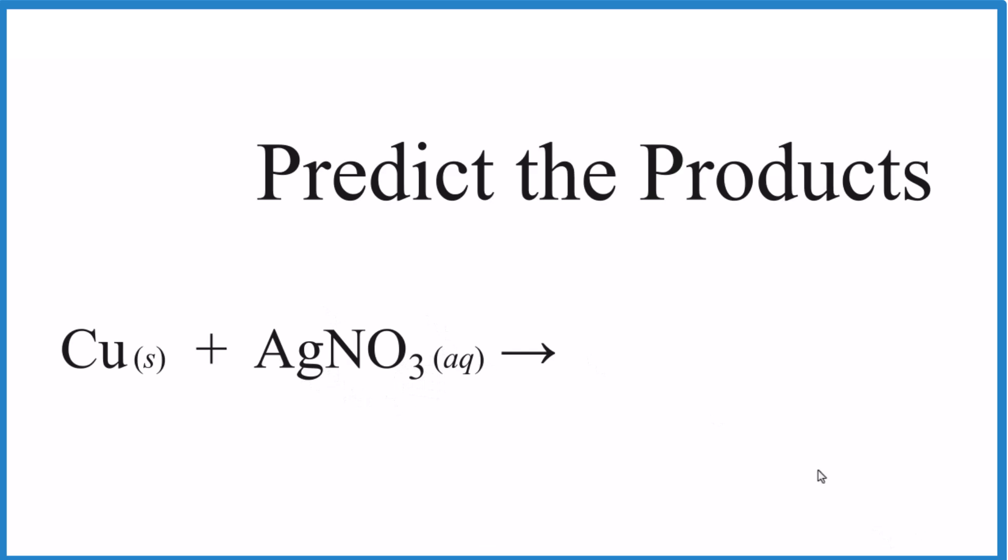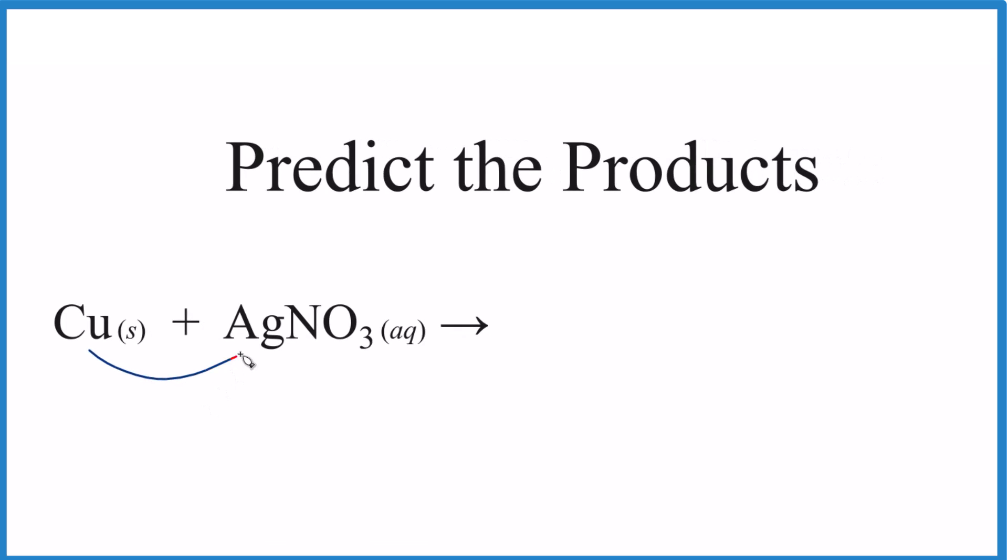In this case we have a metal by itself and then we have a metal and a non-metal bonded together, so we're thinking single displacement or single replacement reaction. In that case the copper would push the silver out.